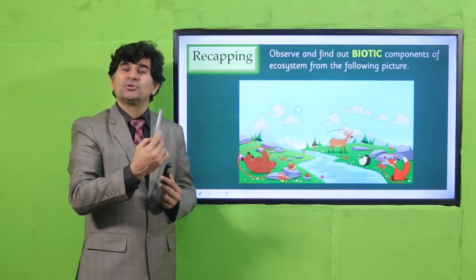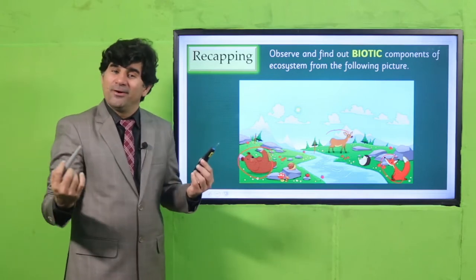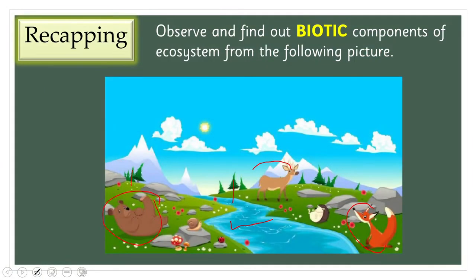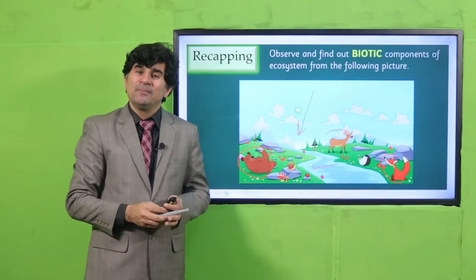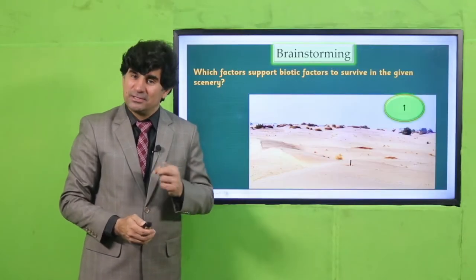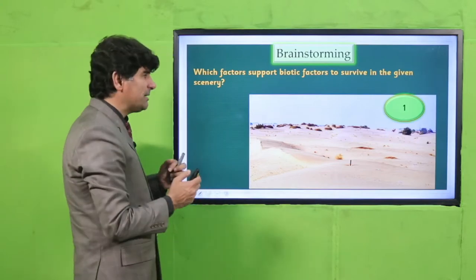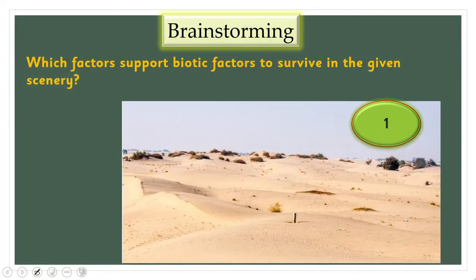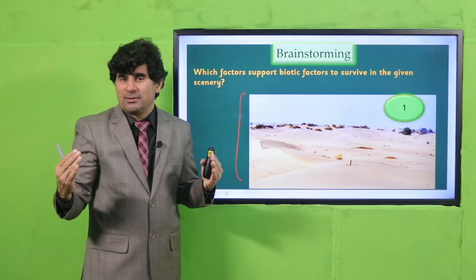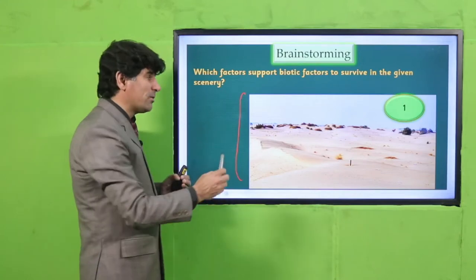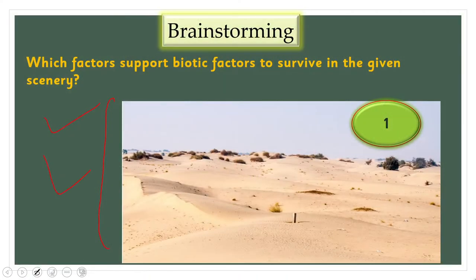For example, see this water and the sunlight falling here. My dear students, see this picture — you don't see any animal in this, you don't see any biotic component. But do you think, while looking at this picture, do you think it has any importance?